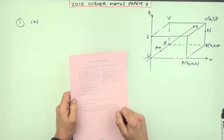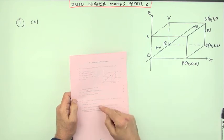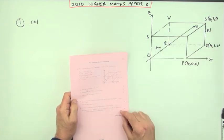Question 1 from the 2010 Higher Maths paper 2. Here we go. Three-dimensional geometry, finding vectors, finding an angle.